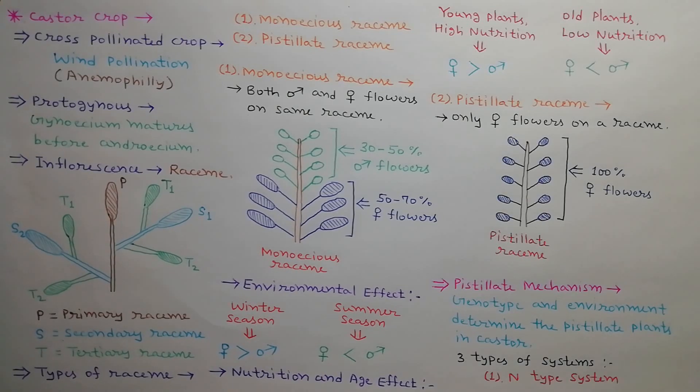Three types of systems are used in pistillate mechanism: N type system, S type system, and NES type system. First is N type system.